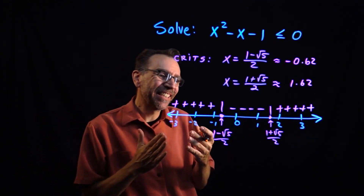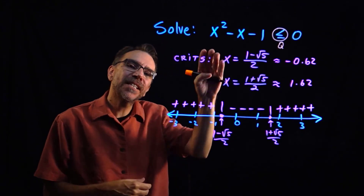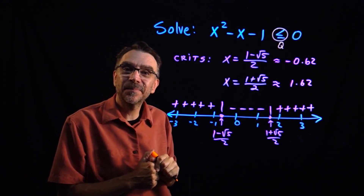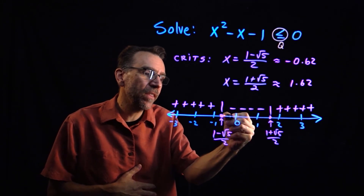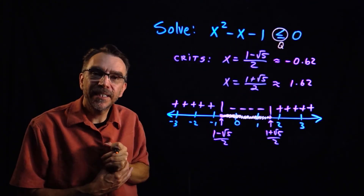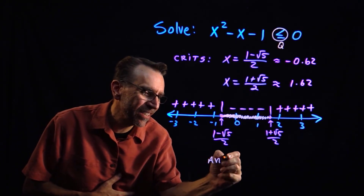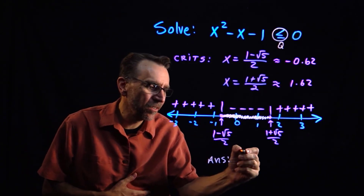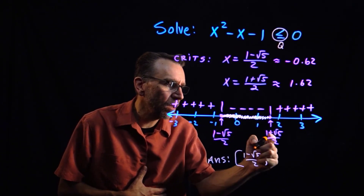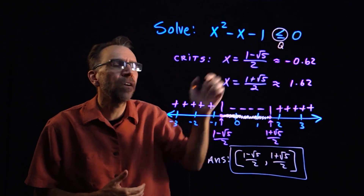Now we use the sign chart to answer the question: when is this quadratic less than or equal to 0? Less than 0 means negative, or below the x-axis. The sign chart shows negative results in the middle interval. In interval notation, using square brackets for inclusiveness, the solution is from 1 minus square root of 5 over 2 to 1 plus square root of 5 over 2.